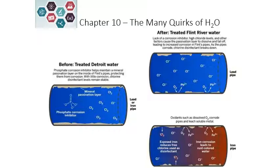You may have heard of the Flint, Michigan water problems. When Flint was receiving water from the city of Detroit, it was being treated with phosphate corrosion inhibitors. The phosphate compound reacts with lead — it's insoluble, and it precipitates out on the walls of the pipe, protecting the water inside from lead contamination.